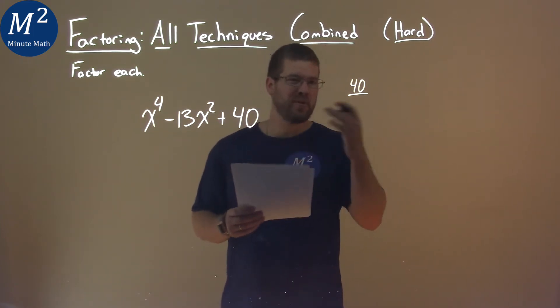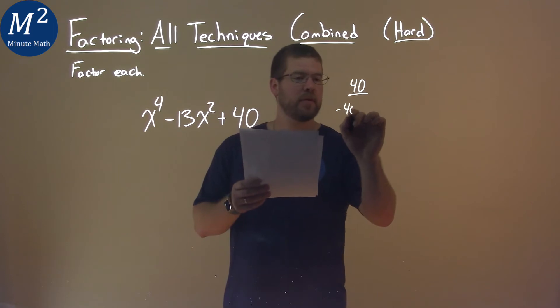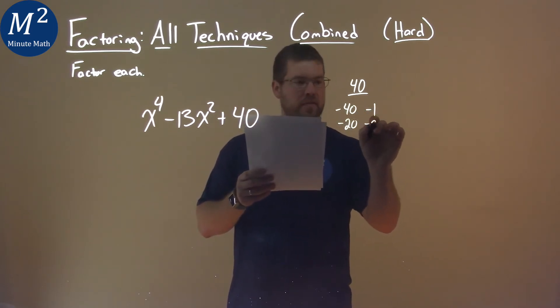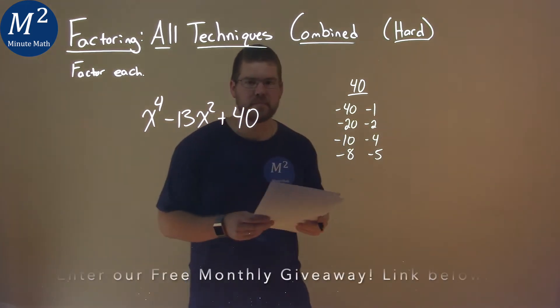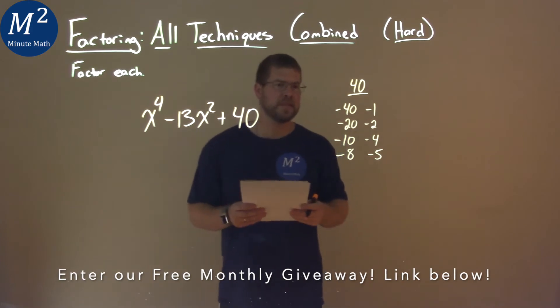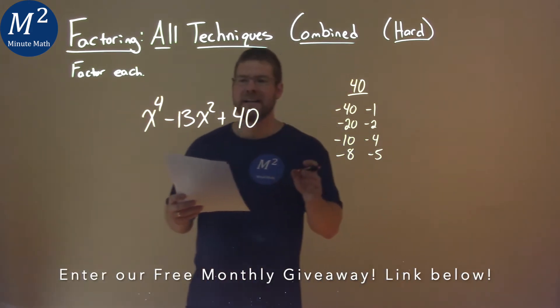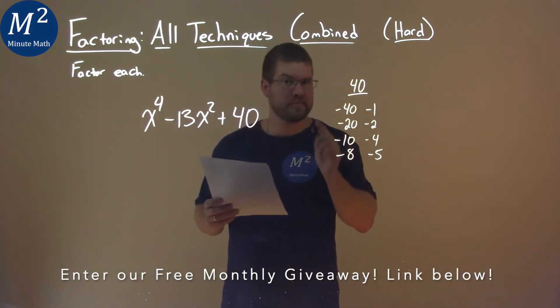Let's go through the pairs: negative 40 and negative 1, negative 20 and negative 2, negative 10 and negative 4, and negative 8 and negative 5. Which ones add to be negative 13? Can you guess it?